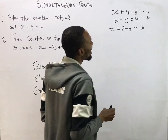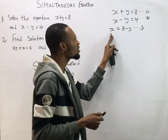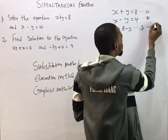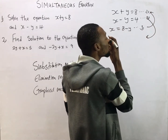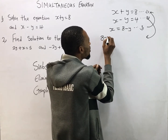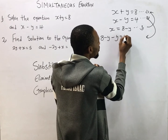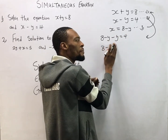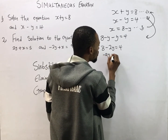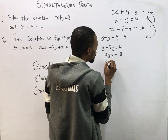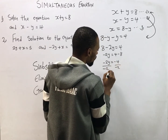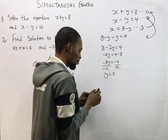Now that I have equation three: s equals 8 minus y, I will substitute this value of s into equation two. Coming to equation two, instead of s I put 8 minus y, so it becomes 8 minus y minus y equals 4. This simplifies to 8 minus 2y equals 4, then minus 2y equals 4 minus 8, giving minus 2y equals minus 4.